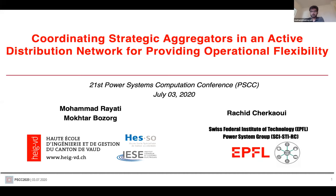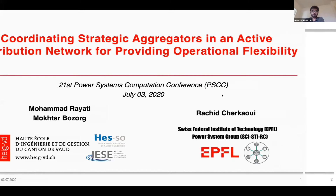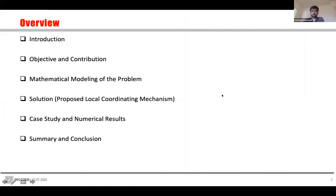The problem we want to address in this paper is we have multiple strategic aggregators in an active distribution network. We want to coordinate them for providing operational flexibility. The overview of the topics I want to cover: first, an introduction, then the objective and contribution of the work, then the mathematical modeling of the problem, then a solution — a local coordinating mechanism — and finally a case study to evaluate the performance of the proposed mechanism.